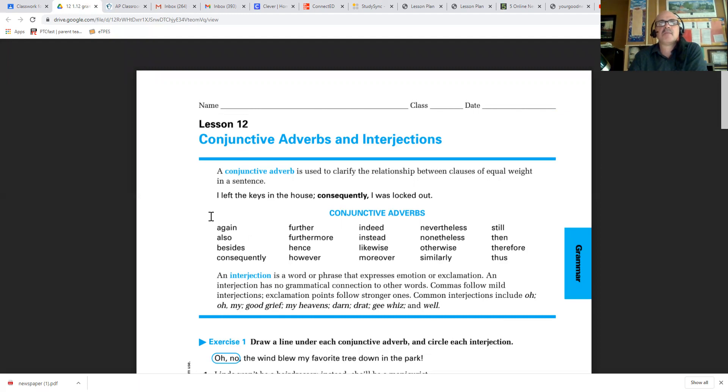I left the keys in the house; consequently, I was locked out. So what you've done there is you have two independent clauses. Consequently, it's not a subordinate conjunction that would otherwise subordinate 'I was locked out'—it's still independent, but it's a little transition word to add a little logic and flow to what you're saying.